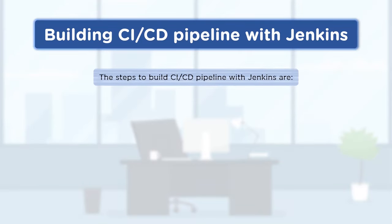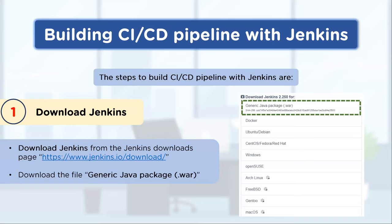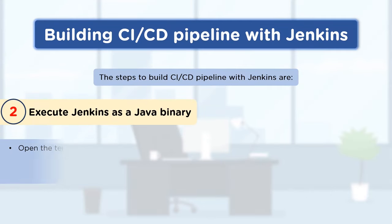To set up the CI/CD pipeline with Jenkins, first download the JDK and install it. Then go to jenkins.io to download Jenkins, which supports different operating systems and platforms — including war file packages, Ubuntu, Debian, CentOS, Fedora, Red Hat, Windows, OpenSUSE, FreeBSD, macOS, and more. Download the generic Java package, which is a WAR file, into a specific folder.